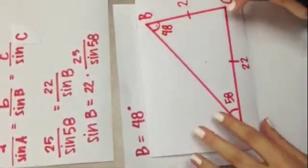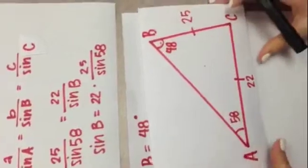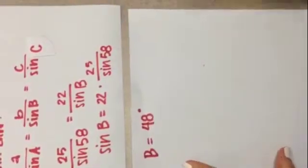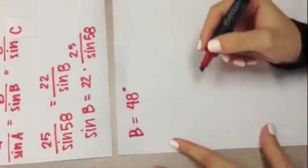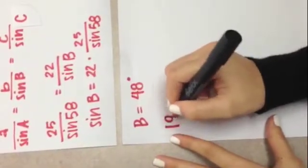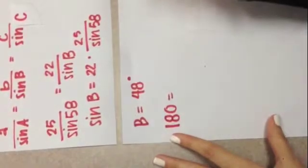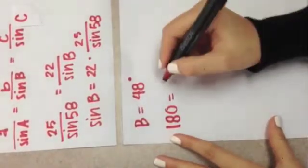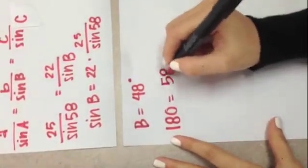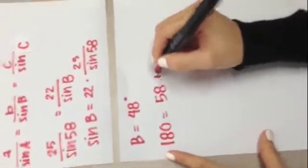We are missing angle C and side c, but as we already know, the sum of all the angles in a triangle are supposed to equal 180 degrees. So, we already know that one of our angles is 58 and another one of our angles is 48.